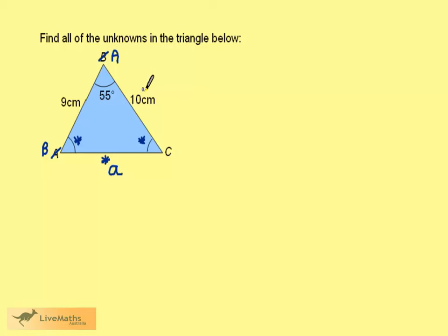I'm going to call this one B, and this B, and the C's can stay as they are. Let's look at our collection of information. We know that B is 10 cm, C is 9 cm,